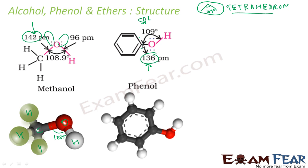Why is the CO bond length less in phenol? One reason is carbon is sp2 hybridized, it has more s-character, it attracts oxygen more strongly, so the bond length is less. The other reason is that it has partial double bond character — if you see the resonance structures, you will see the partial double bond character. So this bond length is less at 136 picometres versus the typical 142 picometres. This is the typical structure of phenol with oxygen at exactly 109 degrees.